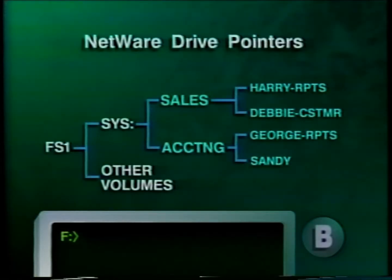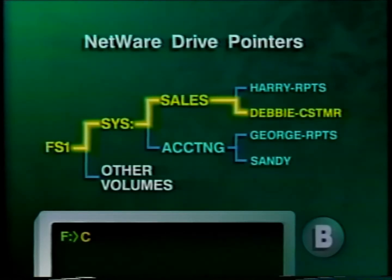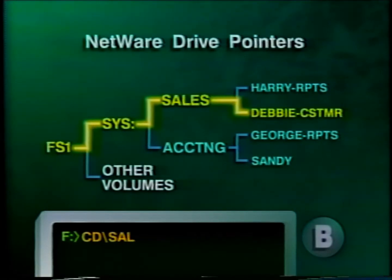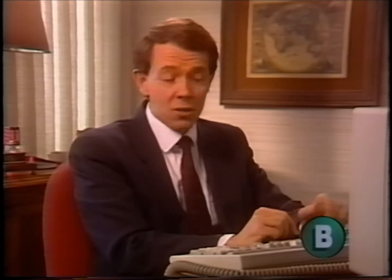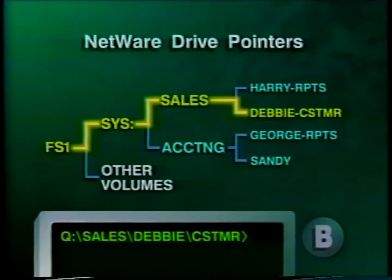This basic drive structure should be familiar to you. Normally, if you wanted to access the customer subdirectory, you would type cd\sales\debbie\customer, then Return — that's 22 keystrokes just to reach the directory you're after. But by assigning this path a network pointer, say Q:, you can accomplish the same thing with just three keystrokes. This saves a lot of time and makes the network far easier to use.